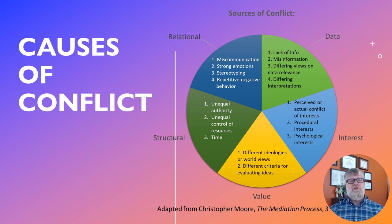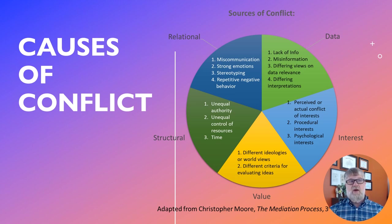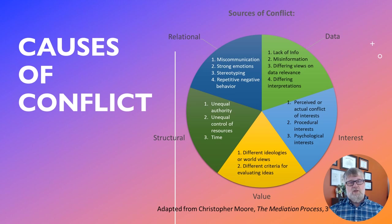The fifth potential source of conflict is relational, which includes miscommunication, strong emotions, stereotyping, and repetitive negative behavior. As relationships become frayed and people stop putting conflict on the back burner in favor of the relationship — what we call the loyalty response — we tend to get a less elegant discharge of conflict. The loyalty response is where you say you're more loyal to this relationship than to whatever is irritating you, but when relationships break down, the loyalty response also breaks down.